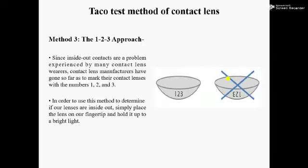Number three: the one, two, three approach. Since inside-out contacts are a problem experienced by many contact lens wearers, contact lens manufacturers have gone so far as to mark their contact lenses with the numbers one, two, three. In order to determine if our contact lenses are inside out, simply place the lens on our fingertip and hold it up to a bright light.